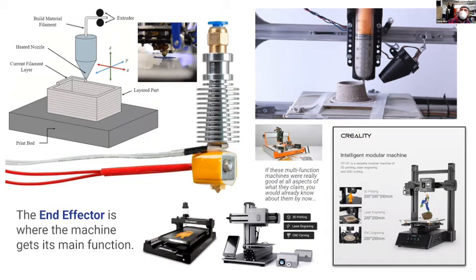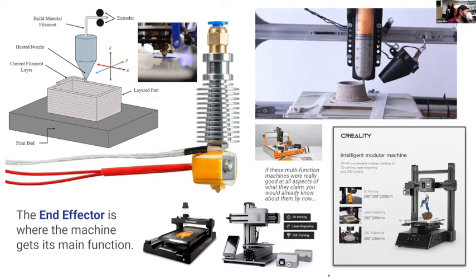Like these machines from Creality — you can swap out the end effectors. There's a 3D printing end effector, a laser engraving end effector where you pull out the 3D printing nozzle and put in a laser, and also an end mill you can put on the same machine. So it has relatively easy-to-swap end effectors on the same motion-controlled machine. These get a lot of attention on Kickstarter. The connection point between the moving parts and the end effector needs to be rock solid — the fact that they're interchangeable makes it a little suspect.